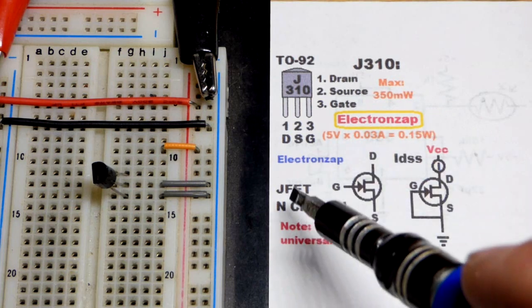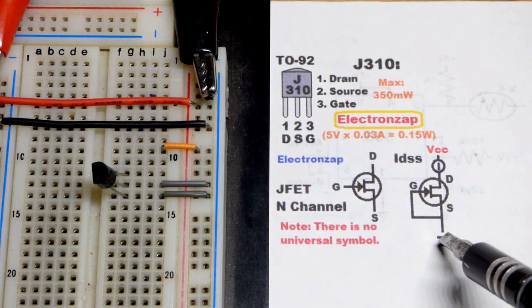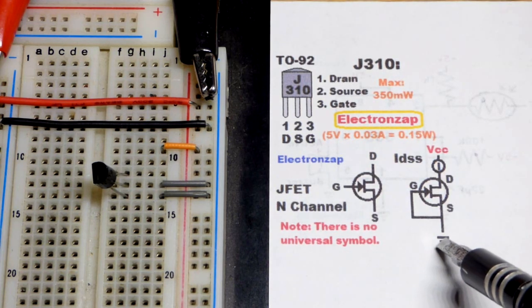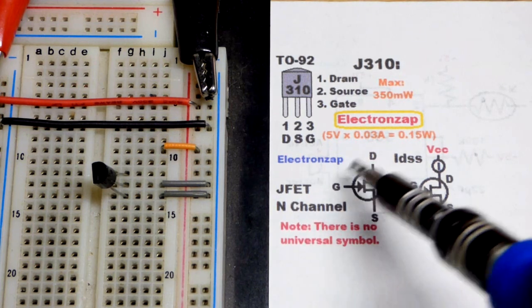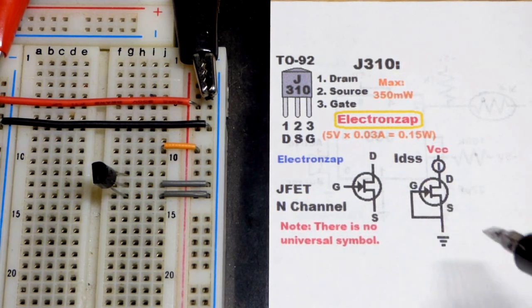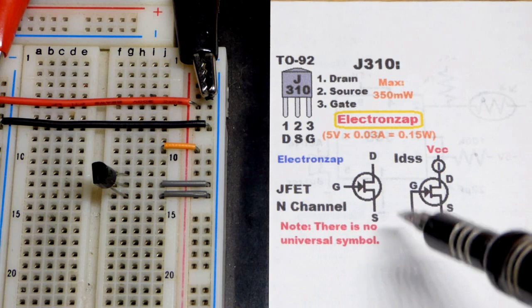But most JFETs allow a lot less current. Some of them allow more. So that's something to be aware. There's no universal symbol. This is the one that I like that a couple of sources I use also use.